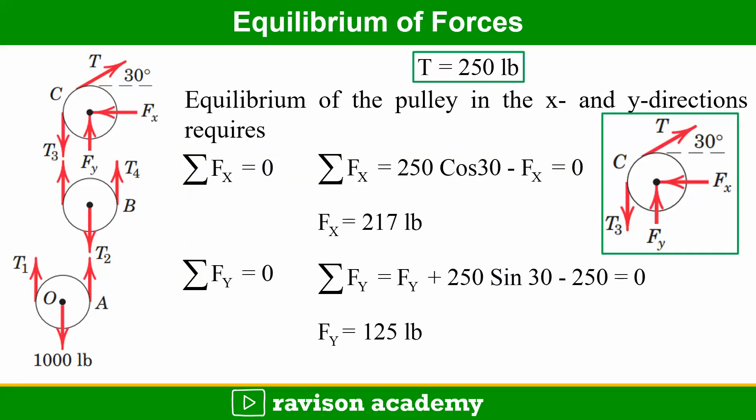So from the equilibrium of the pulley in X and Y direction, summation Fx equals 0. That is 250 cos 30 minus Fx equals 0, so Fx equals 217 lb. Similarly, summation Fy equals 0. That is Fy plus 250 sin 30 minus 250 equals 0, so Fy equals 125 lb.